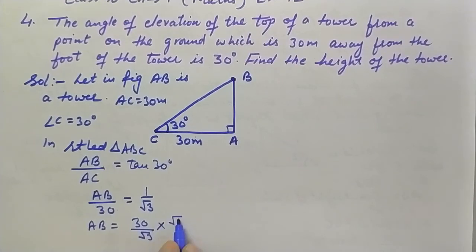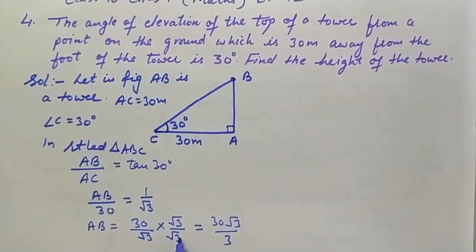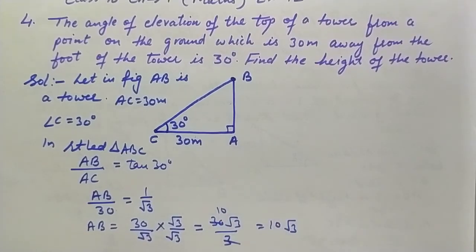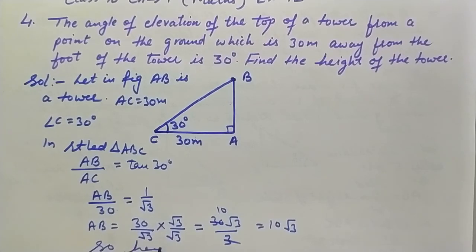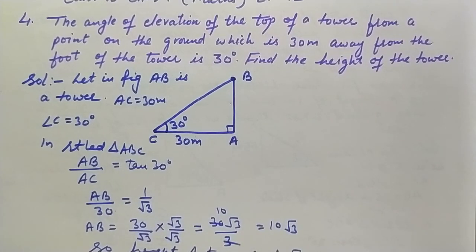Now we rationalize: multiply numerator and denominator by root 3, giving 30 root 3 over 3, which simplifies to 10 root 3. So the height of the tower is 10 root 3 meters.